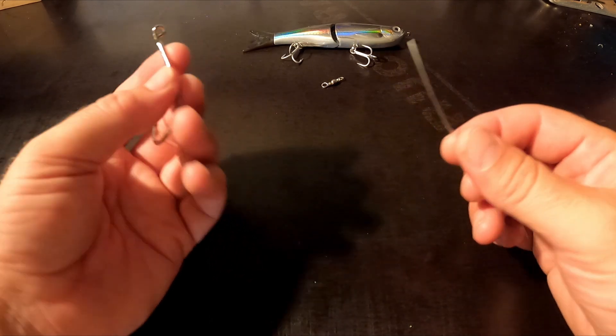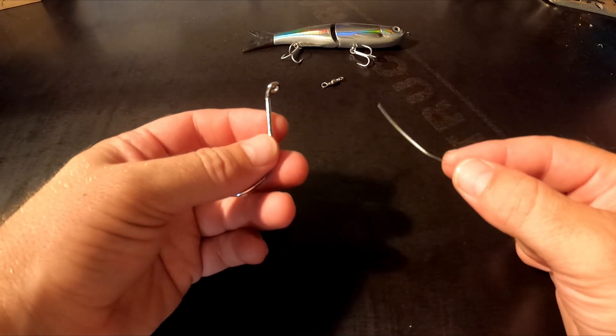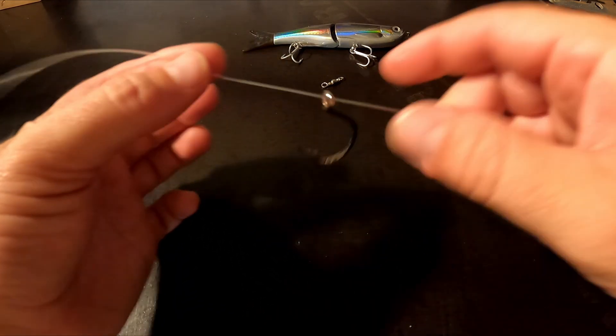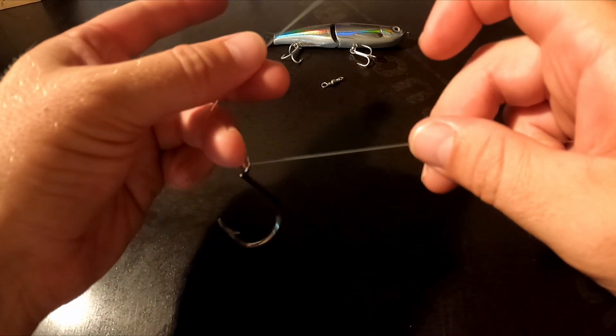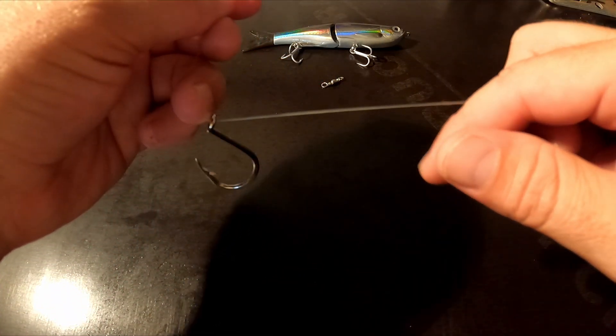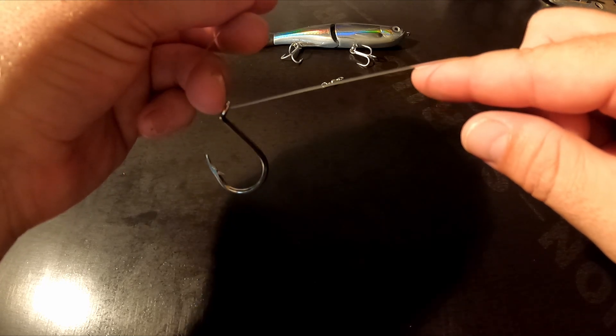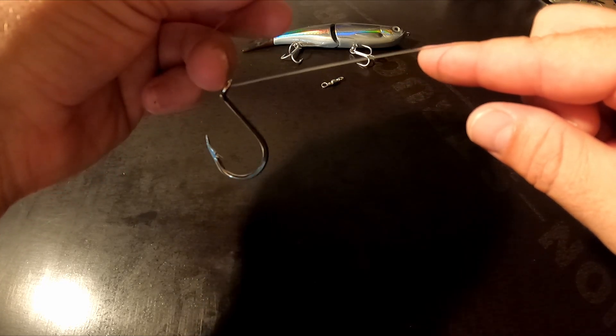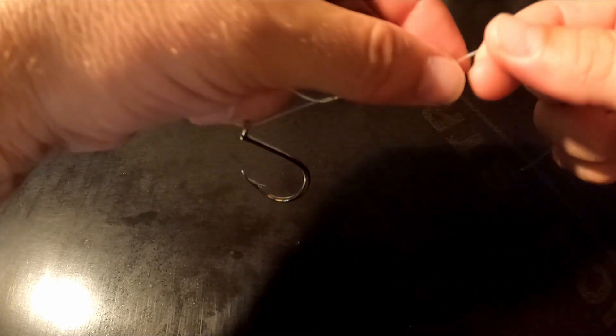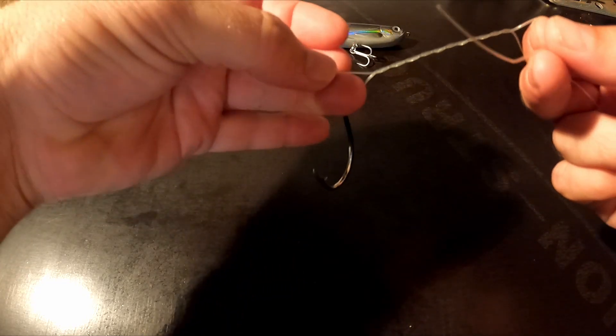Basically, all you want to do is grab your tagline and your hook, pass your tagline through the eye of the hook like that, and then wrap your tagline around your main line five to six times. If you're using heavier than 12 pound line, I would say go with five wraps. If it's 12 pound or lighter, then go with six. So we'll do five here: one, two, three, four, five.